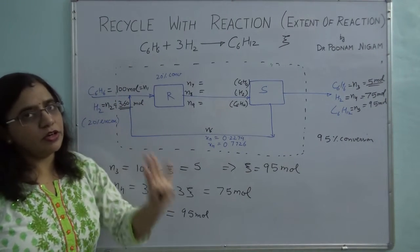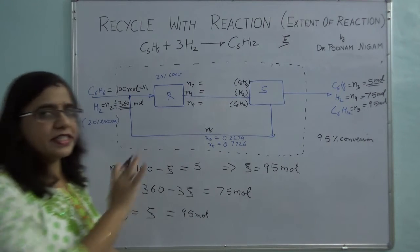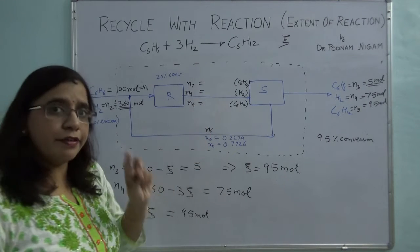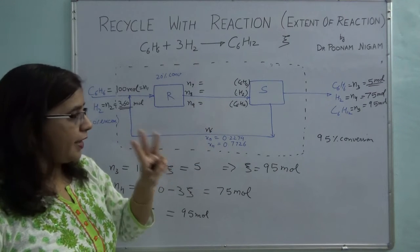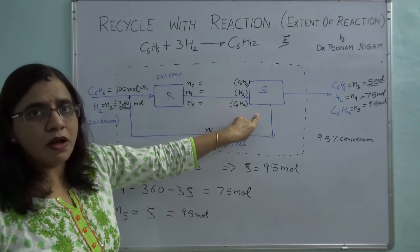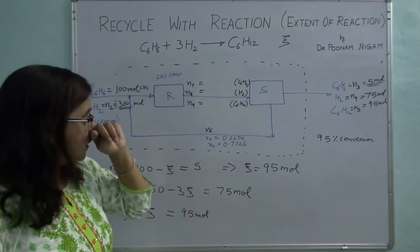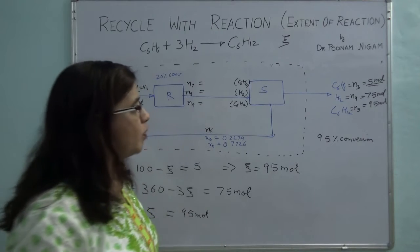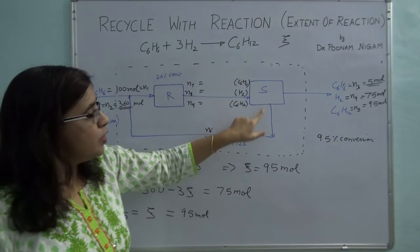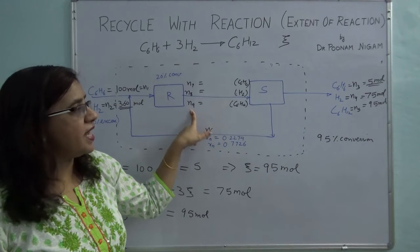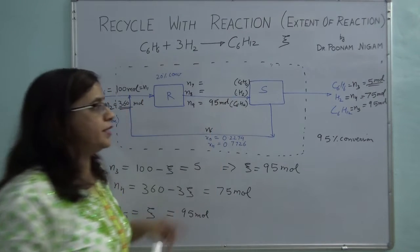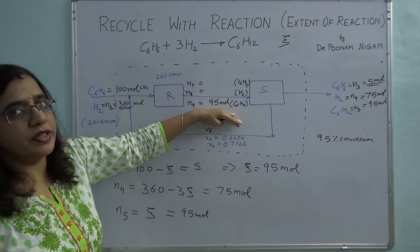I have taken the overall balance and got the values of four unknowns. Now let's see how to proceed. If I take balance on the separator, I have four unknowns but only three independent molecular species balance equations — degree of freedom is 1, so I cannot fully solve the separator. However, by inspection, cyclohexane C₆H₁₂ only comes out in the product stream, not in the recycle. So taking a C₆H₁₂ balance gives N9 = N5 = 95 moles.